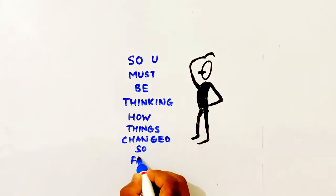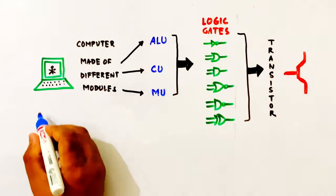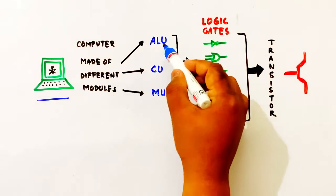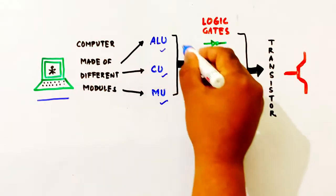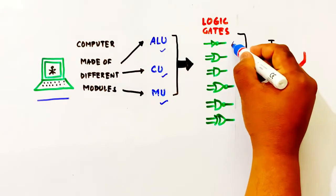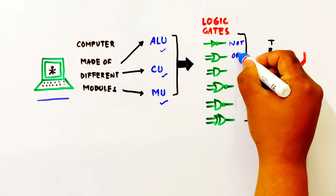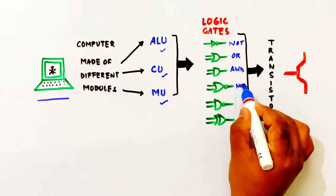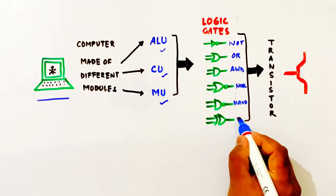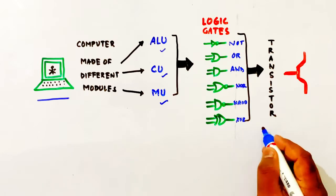So we have a question to answer. The computer is made up of an arithmetic and logical unit, control unit, and memory unit. If you look at this unit, we have gates. The basic logic gates are NOT gate, OR gate, AND gate, NOR gate, NAND gate, and XOR gate. These basic gates are used by the memory module.